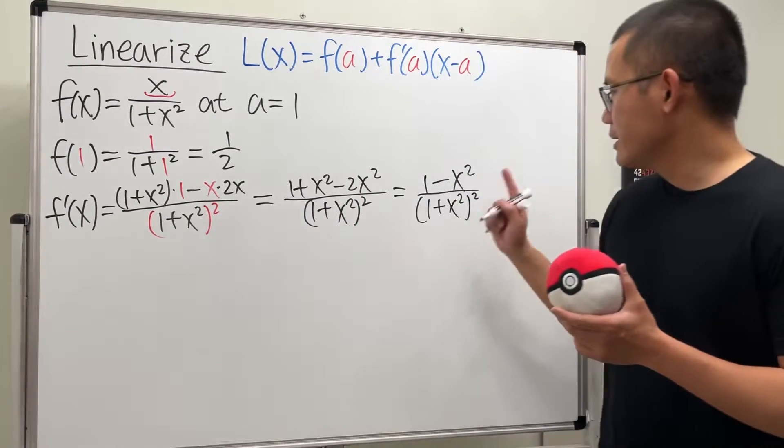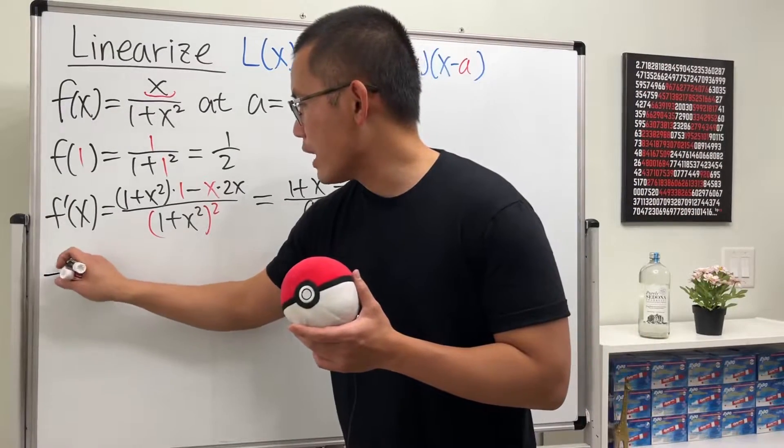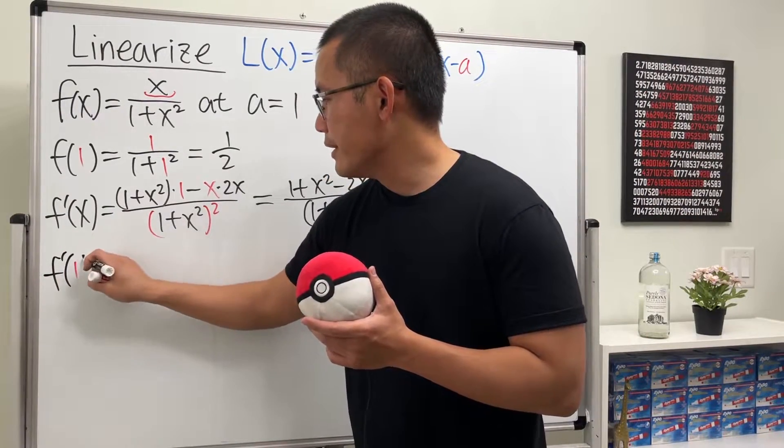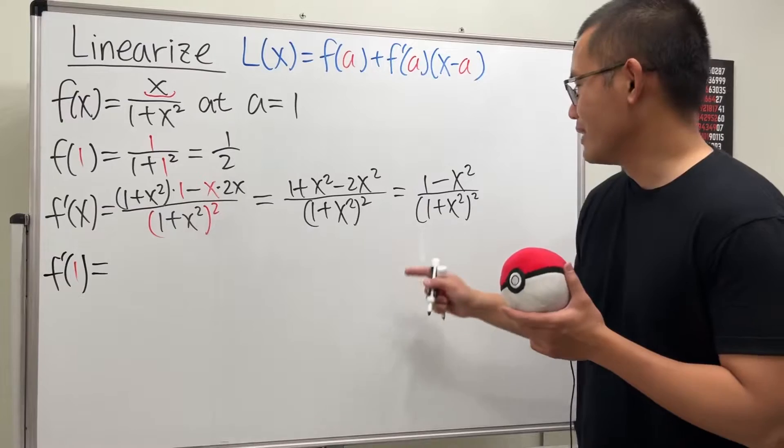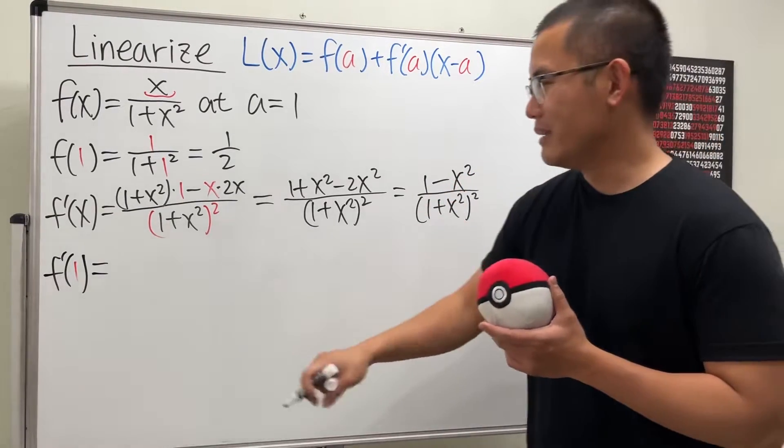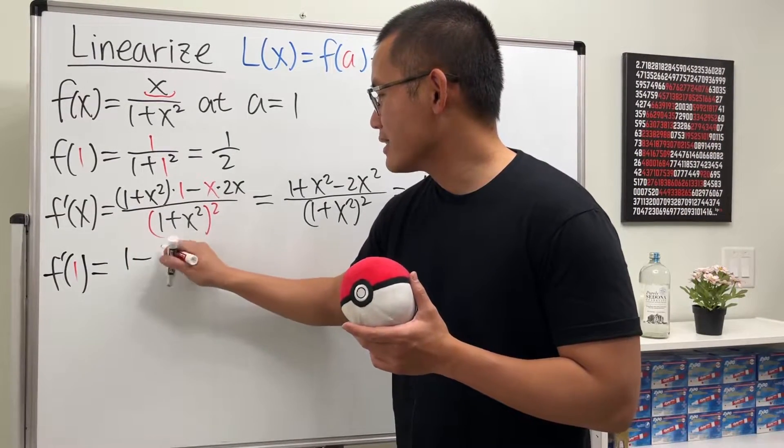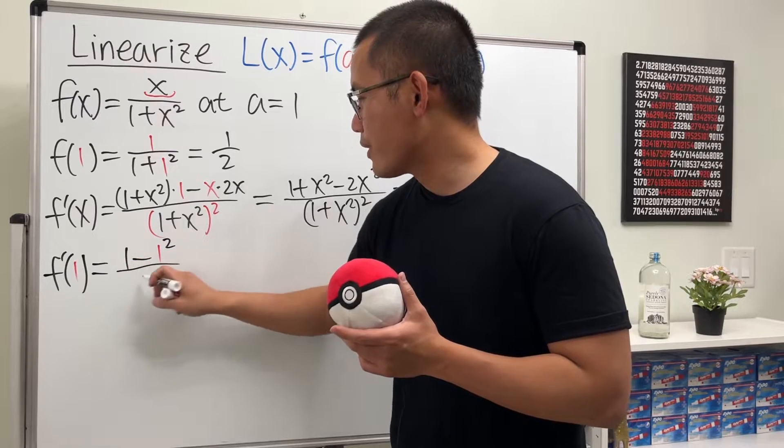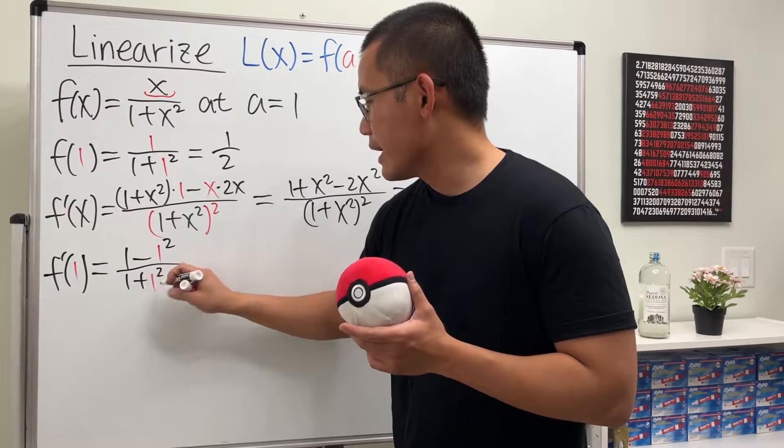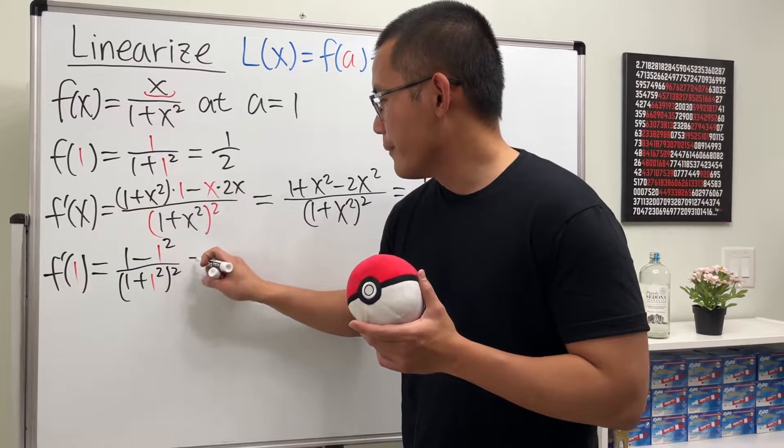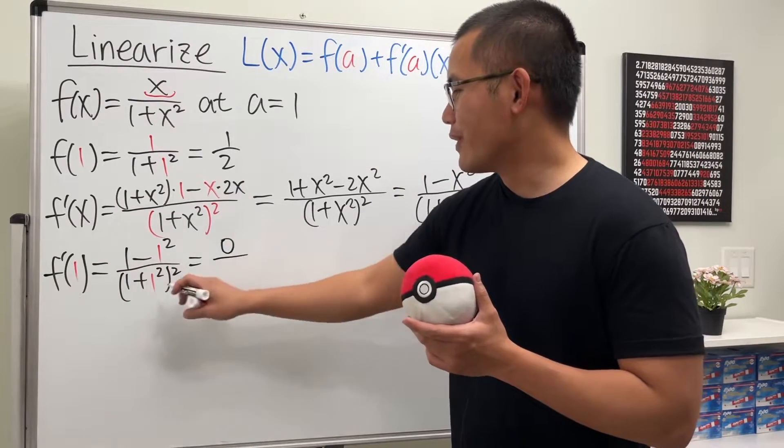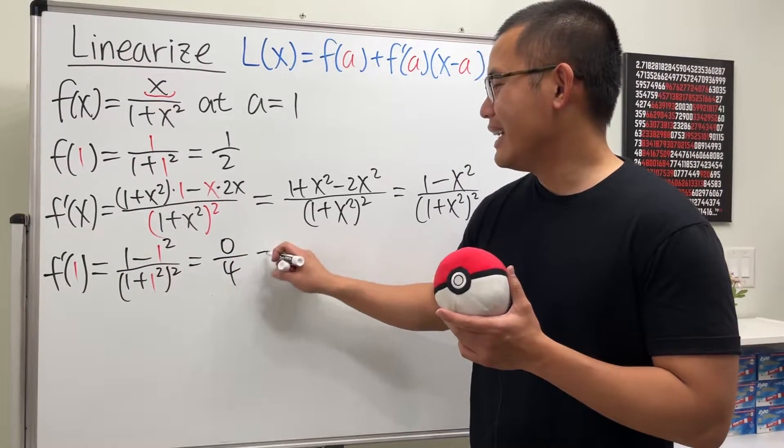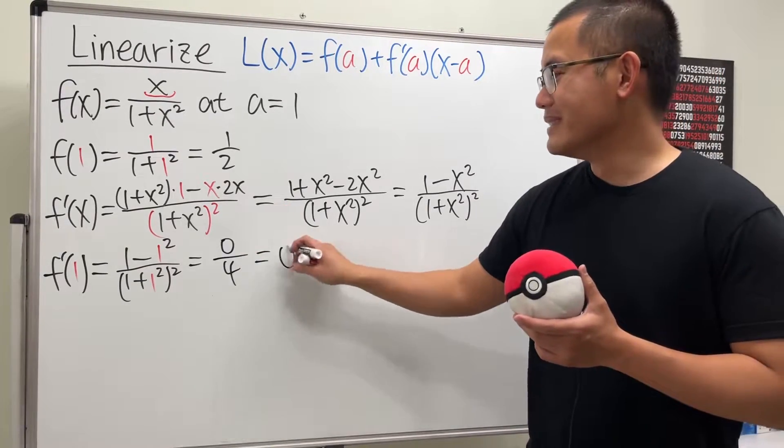And then plugging 1 in here, and we see that f prime of 1. It's going to be a fun 1. Because if you put 1 right here, it gets 0. And let me show you guys all the work. 1 minus 1 squared over 1 plus 1 squared, and then square. The top is just 0 over, the bottom is 4, and 0 over 4 gets 0.